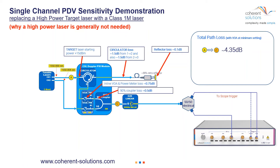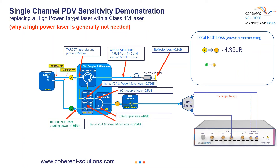If we look at the reference path — from point B to point C — you have about 0.75 dB through the attenuator and almost 10 dB of loss through the 10% tap of the coupler. If you add all that up, that's approximately 10.75 dB of loss from point B to C.